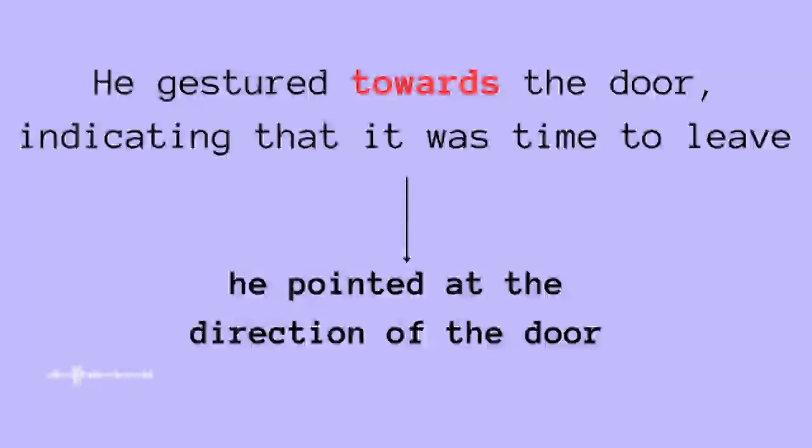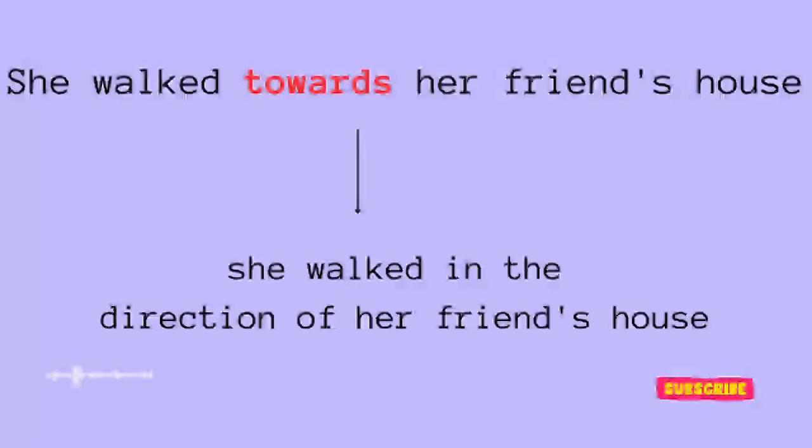Let's have a look at another example. She walked towards her friend's house. So with the use of toward, we can tell that she walked in the direction of her friend's house. So this is how you can tell where is the person moving to, like it's about the intention of the movement.